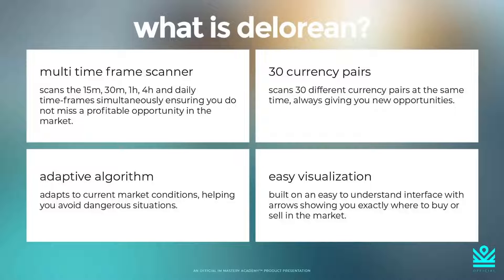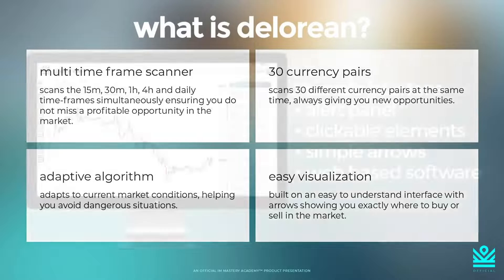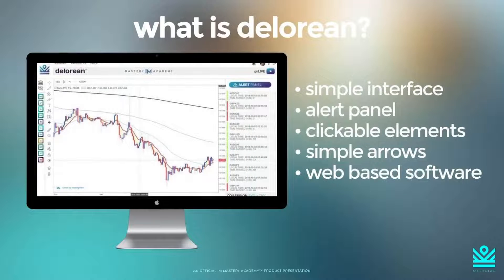And that is why the adaptive algorithm is so powerful — because on dangerous days to trade, we keep you in the market. Finally, it comes with an easy visualization. What I mean by this is that it is very easy to see when and where the DeLorean wants you to buy or sell in the market.